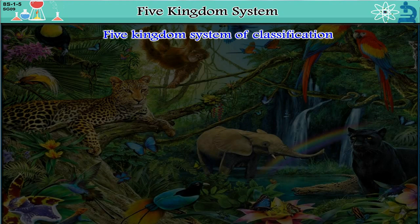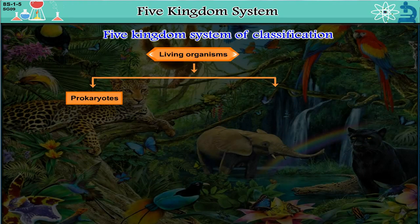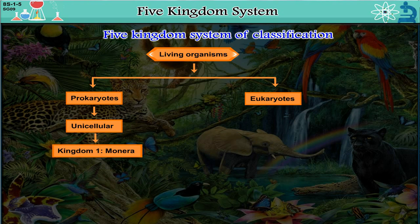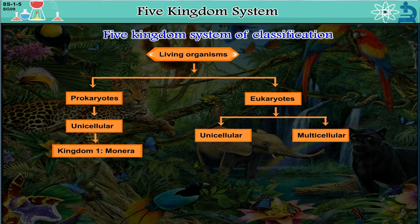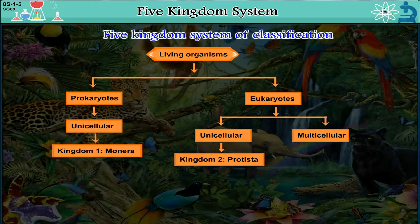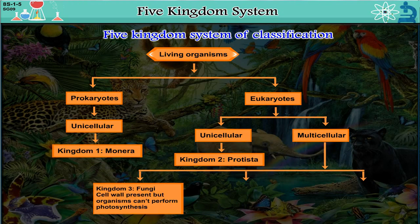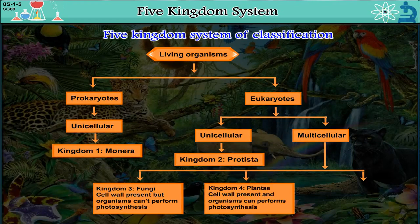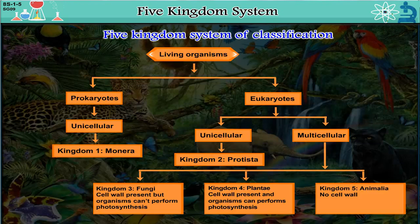Five Kingdom System of Classification. Living organisms are classified into Prokaryotes and Eukaryotes. Prokaryotes include unicellular organisms placed in Kingdom Monera. Eukaryotes include unicellular organisms in Kingdom Protista. Multicellular organisms include Kingdom Fungi, where a cell wall is present but organisms cannot perform photosynthesis; Kingdom Plantae, where a cell wall is present and organisms can perform photosynthesis; and Kingdom Animalia, where there is no cell wall.